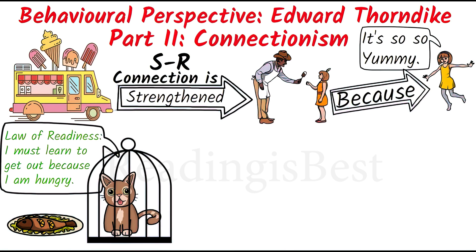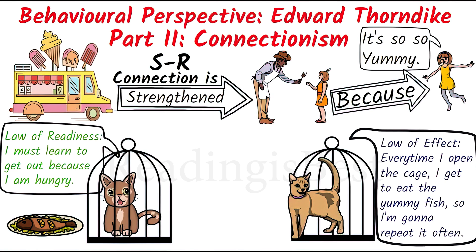This process was repeated numerous times and each time Thorndike noted how long it took for the cat to open the puzzle box. The experiment was also carried out using several different cats. Although the cats discovered the escape mechanism through trials and errors in their first attempt, with successive experiments the amount of trial and error was reduced, as cats learned which action would bring a reward and which would be unrewarded.